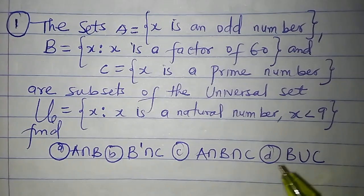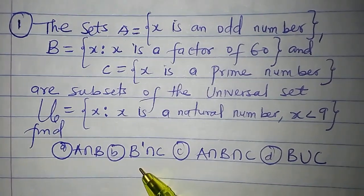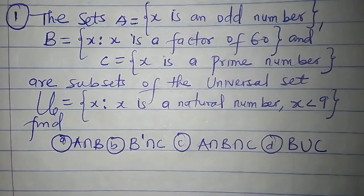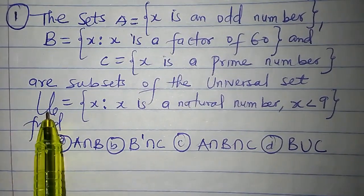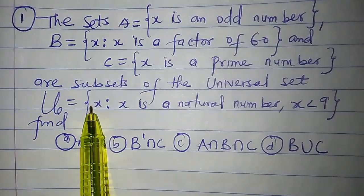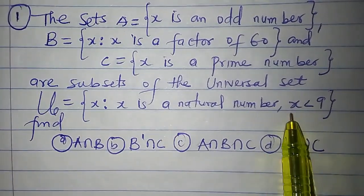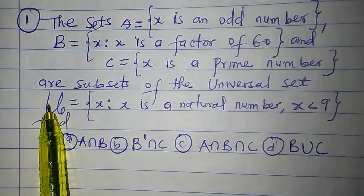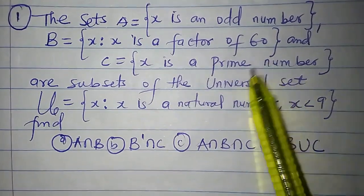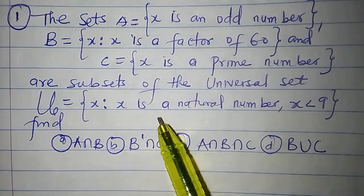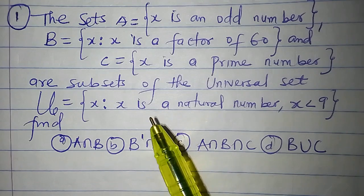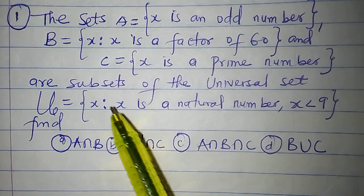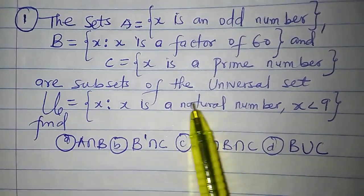Before we can determine each of these, let us first write out the members that make up each of these sets. We are given the universal set, which is the set of numbers X such that X is a natural number and X is less than 9. It is this universal set that will be used to determine the elements in sets A, B, and C, because the universal set is the set that contains all elements for a given problem. Let us first determine the elements in this universal set.